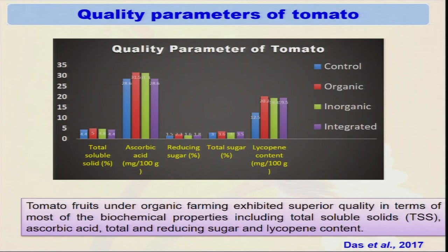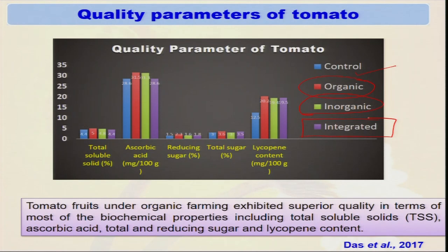We have done experiments at the ICAR research farm on the quality of different things. A classical example is tomato grown in different organic systems: one control with no fertilizer or pesticide, one under organic with only FYM and bio-fertilizer, one inorganic with only inorganic fertilizer, and one integrated with 50 percent nutrients from organic and 50 percent from inorganic sources. We have seen that in the organic condition, ascorbic acid content is significantly higher compared to the control and inorganic sample. Similarly, lycopene content — a quality parameter of tomato — is always higher in organic farming. It has been proven that organic farming produces better quality food.